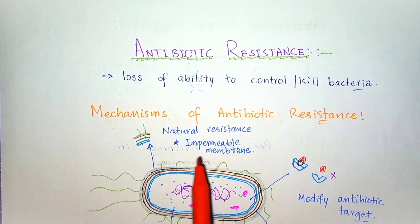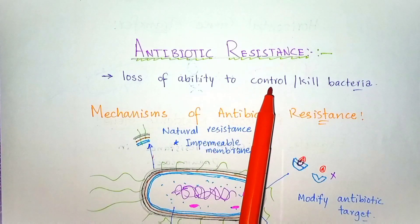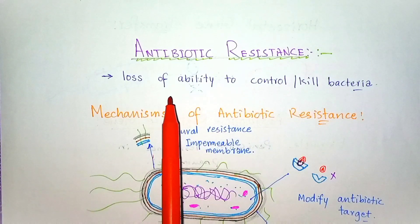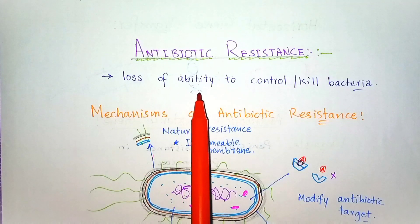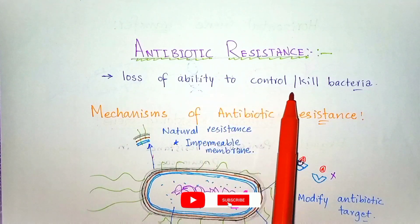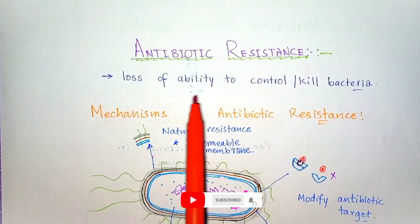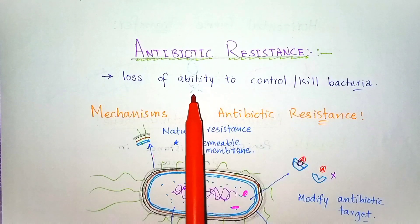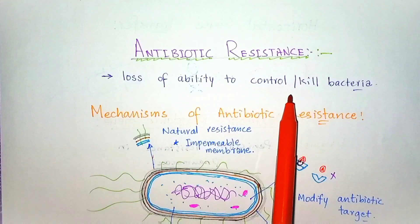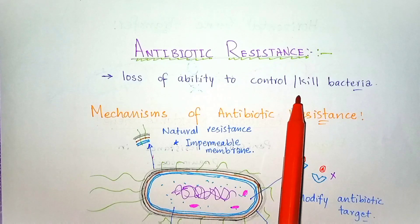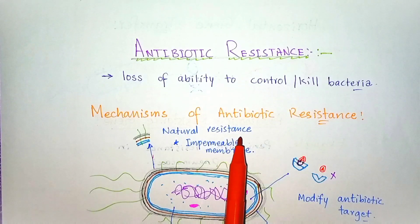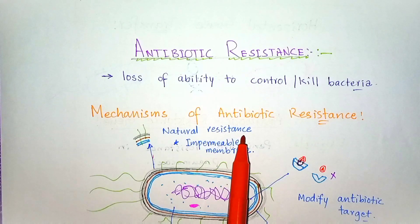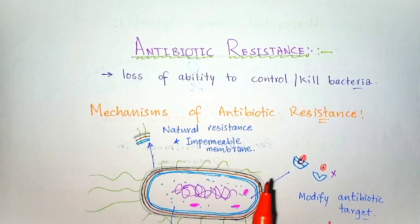Antibiotic resistance occurs when an antibiotic loses its ability to effectively control or kill the bacteria. In this case, the bacteria become resistant and continue to grow because the antibiotic being administered has no ability to kill them. Antibiotic resistance is a complicated issue and is one of the greatest threats to public health.